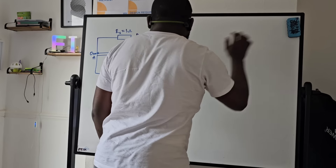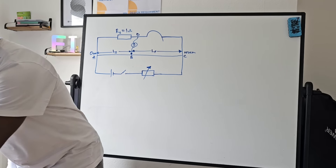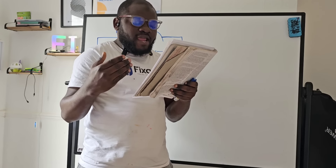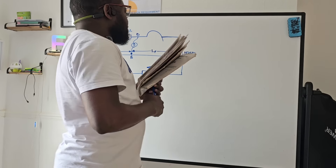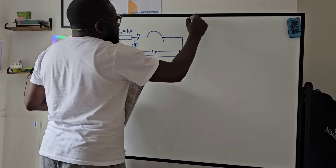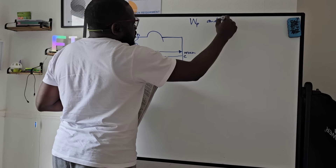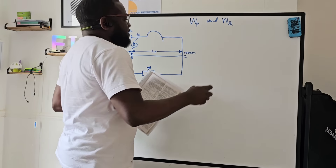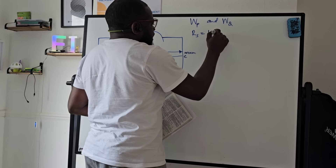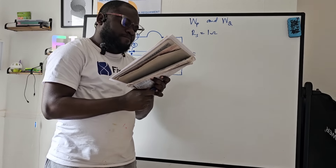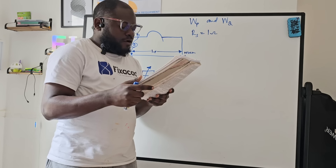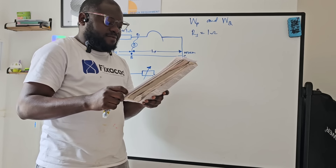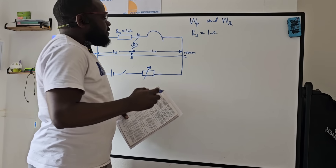Let's get started. I'm going to read the question out to you. You are provided with two wires marked P and Q, a resistor Rs equal to one ohm, and other necessary apparatus. Roman numeral one: connect Rs in the left-hand gap of the meter bridge. A length L equal to 100 centimeters of wire P in the right-hand gap and the other apparatus as shown in the diagram.